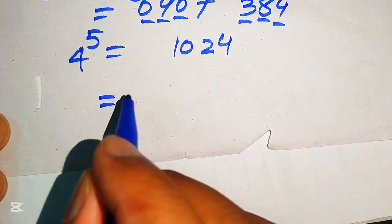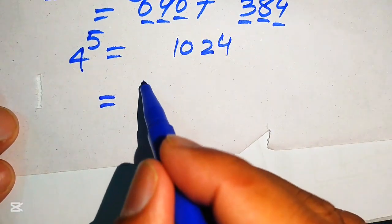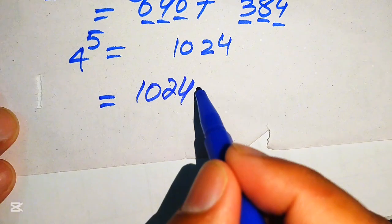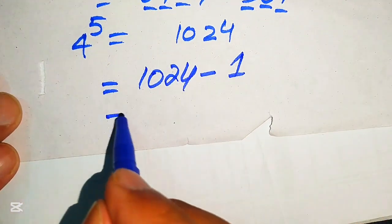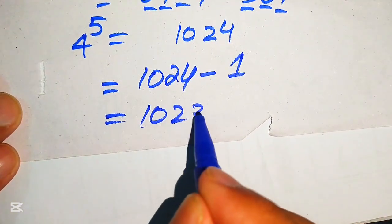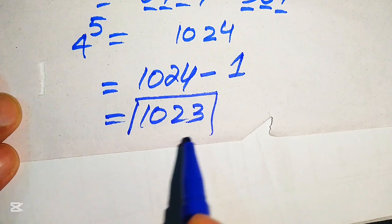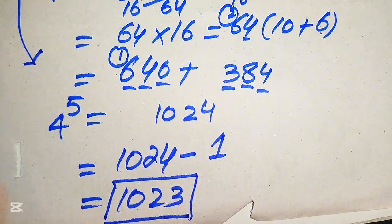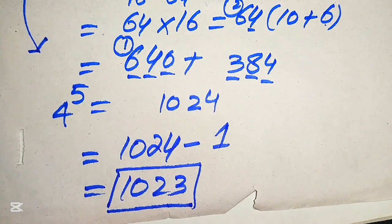Substituting back: 4^5 − 1 = 1024 − 1 = 1023. This is the final answer for this problem. Thank you so much for watching — please subscribe to my channel for more exciting videos.